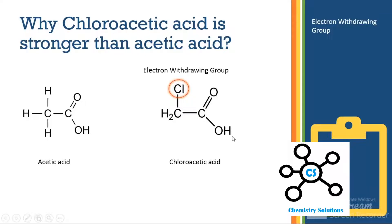Because the oxygen lacks negative charge, it loses its hold on the proton attached to it. Therefore, the proton is donated easily by the chloroacetic acid molecule. If a molecule has a good tendency of donating a proton, it will be a strong acid.